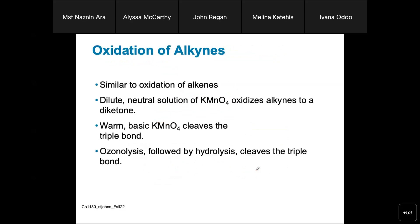Oxidation of alkynes: a dilute, neutral solution of potassium permanganate oxidizes alkynes to diketones. If we heat and add a basic situation (KOH), we get oxidative cleavage instead. So there are two situations: neutral conditions give diketone, and basic/heated conditions cleave the triple bond to give carboxylic acids.